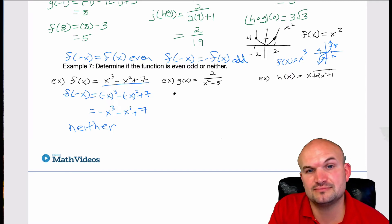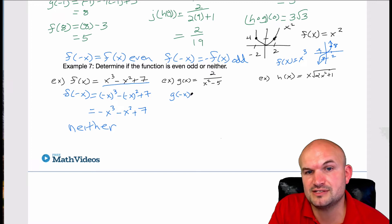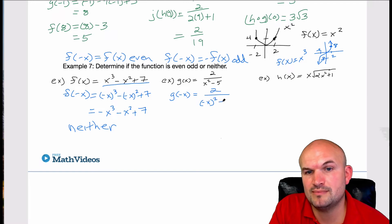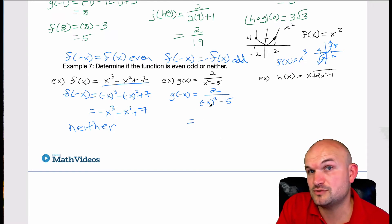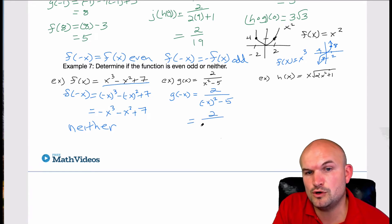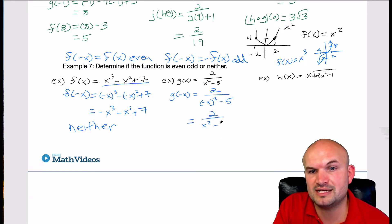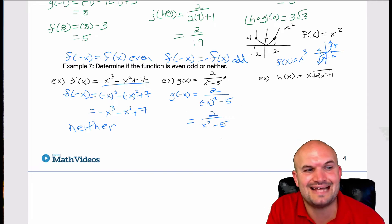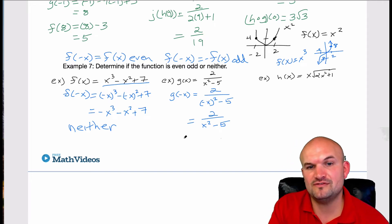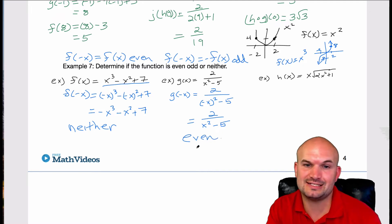Now let's check g(x). If I plug in g(negative x), I get 2 over (−x)² − 5. (−x)² is x², so I get 2 over x² − 5. By plugging in negative x, I get the exact same function back. Therefore, I have a function that is symmetrical about the y-axis, so it is even.